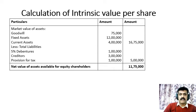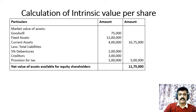Now for the solution. Step 1: Net value of assets available for equity shareholders. Market value of assets: Goodwill ₹75,000 + Fixed Assets ₹12 lakhs + Current Assets ₹4 lakhs = total ₹16,75,000. Deduct outside liabilities: 5% Debentures ₹1 lakh + Creditors ₹3 lakhs + Provision for Tax ₹1 lakh = ₹5 lakhs. Therefore, net assets available for equity shareholders = ₹16,75,000 − ₹5,00,000 = ₹11,75,000.